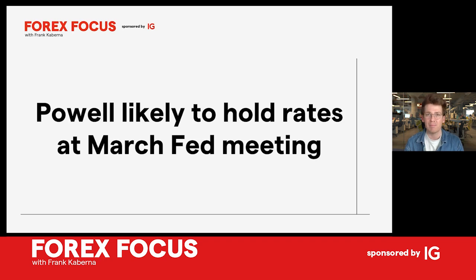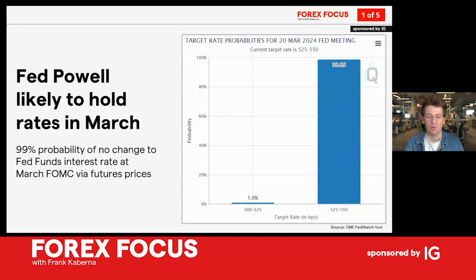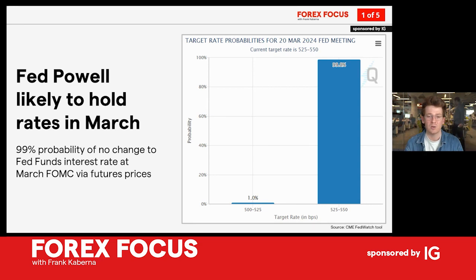We'll also take a look at what the dot plot might hold, as we're going to get a dot plot here in March, and what that means for U.S. interest rates, Treasury yields, Treasury bonds, and beyond to the U.S. dollar as well. Let's start with this March meeting — the odds are overwhelmingly in the camp of no change. We're looking at the Fed funds futures from the CME Group, and how traders are projecting where the Fed will have interest rates at each meeting. With the March meeting very close at hand, there's a 99% chance from futures traders that rates are held unchanged at the range of 5.25% to 5.5%.